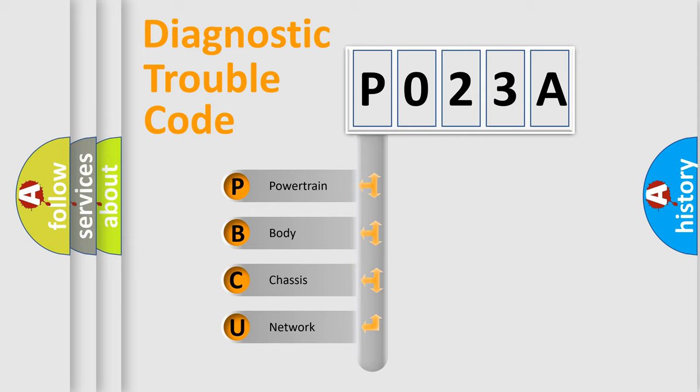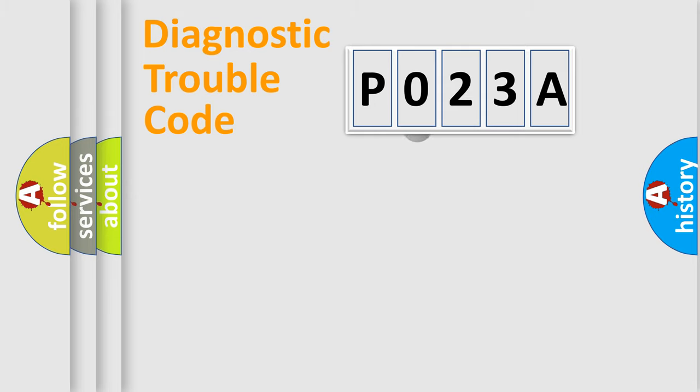We divide the electric system of automobile into four basic units: Powertrain, body, chassis, and network. This distribution is defined in the first character code.